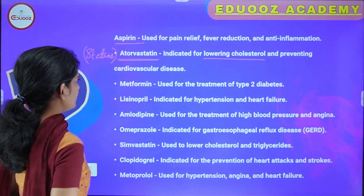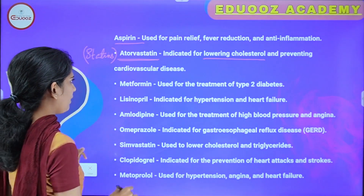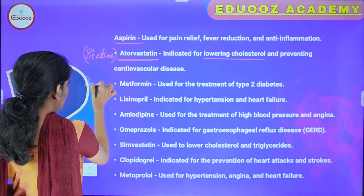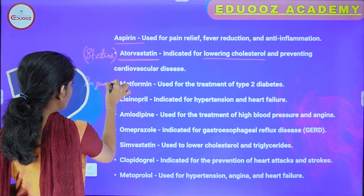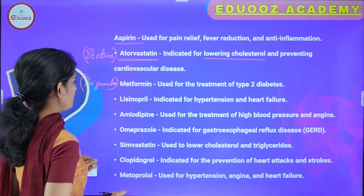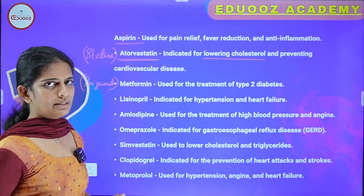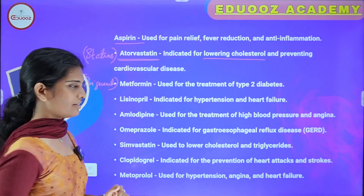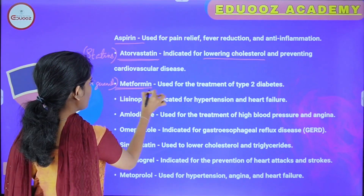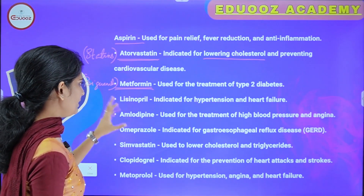Next one: Metformin. Metformin is a biguanide, in the biguanide category. It is a hypoglycemic drug used in diabetes mellitus. Metformin is used in the treatment of type 2 diabetes mellitus.